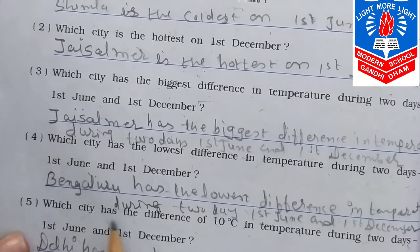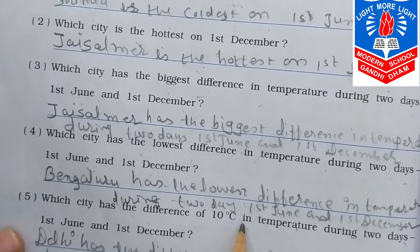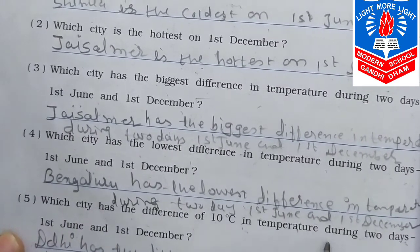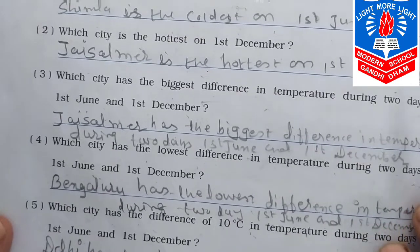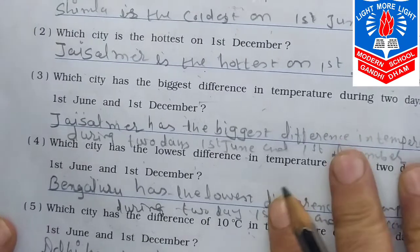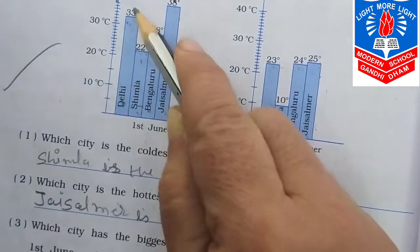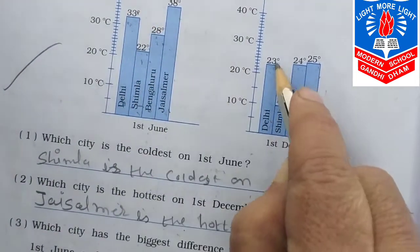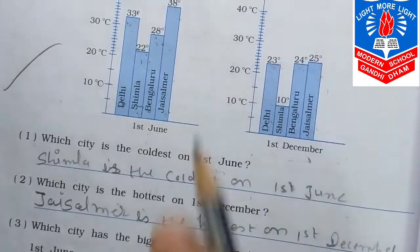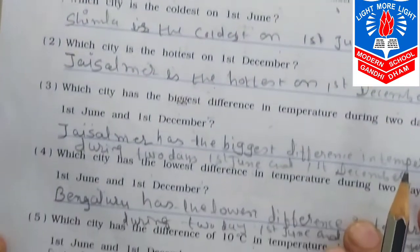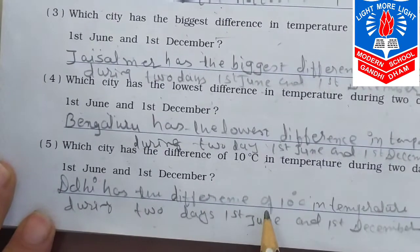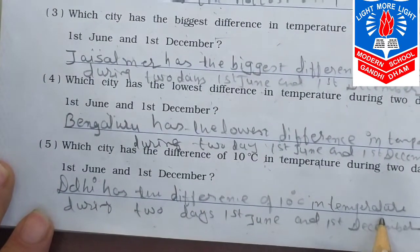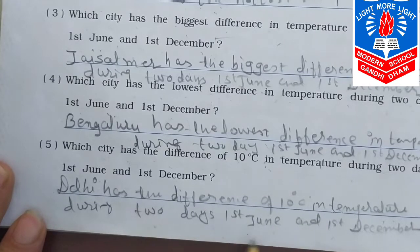Which city has the difference of 10 degree centigrade in temperature during the 2 days — 1st June and 1st December? That is Delhi. Delhi is 33 on 1st June and 23 on 1st December — difference is 10 degrees. So Delhi has the difference of 10 degrees temperature during the 2 days.